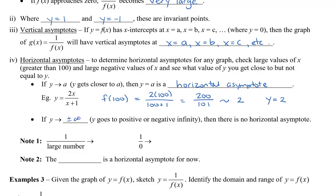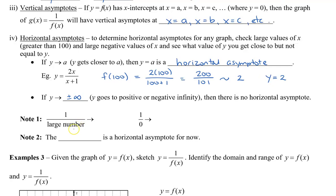If y is approaching positive or negative infinity, then there is no horizontal asymptote. When we have 1 over a large number, because the number is so large on the bottom, we're going to approach 0. If 1 is divided by 0, we get infinity. For the purpose of this course, we're going to usually see that the x-axis is our horizontal asymptote.